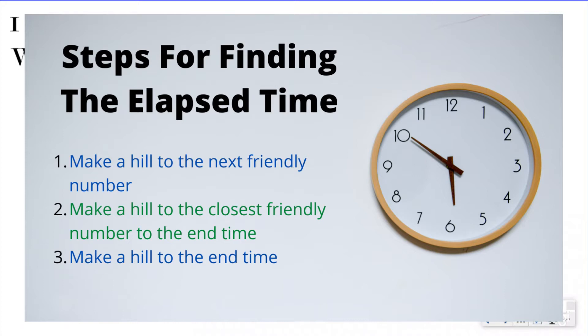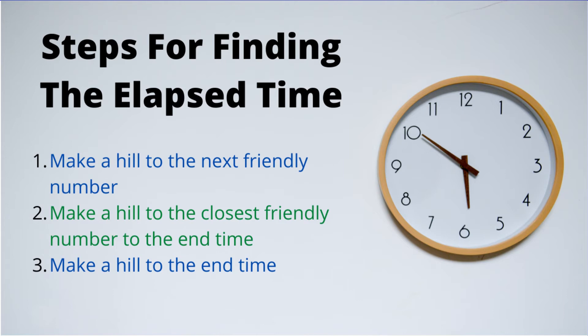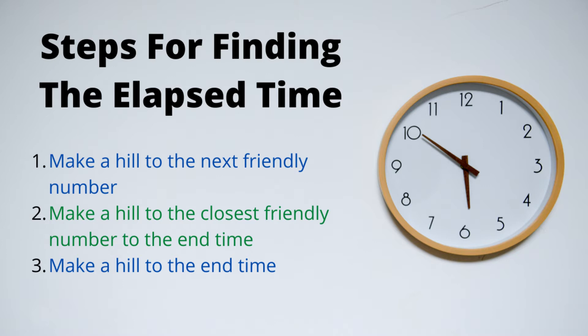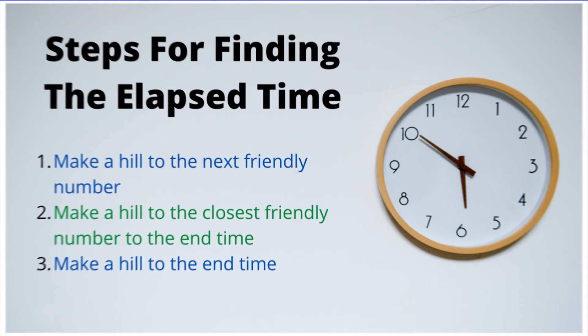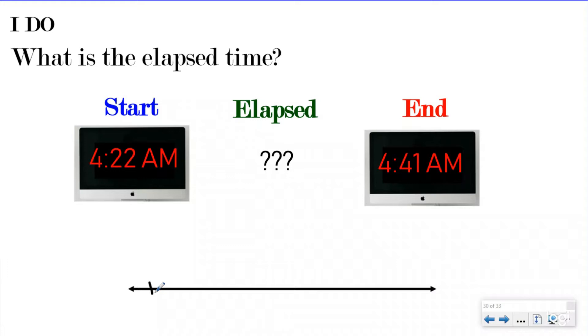Here are our steps for finding the elapsed time — you can pause the video and write these down. Step one: make a hill to the next friendly number. Friendly numbers are multiples of 10, meaning numbers ending in a zero. Step two: make a hill to the closest friendly number to the end time. Step three: finish the elapsed time by making a hill to the end time. I'm starting at 4:22 on my timeline. My next friendly number after 22 would be 30, so I'm going to go forward to 4:30.